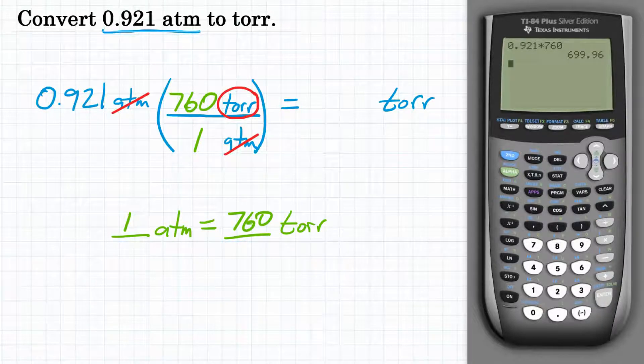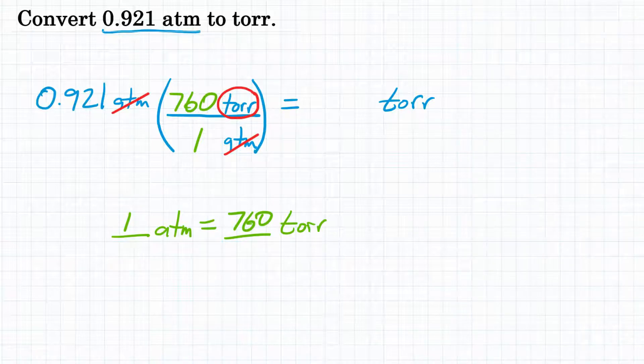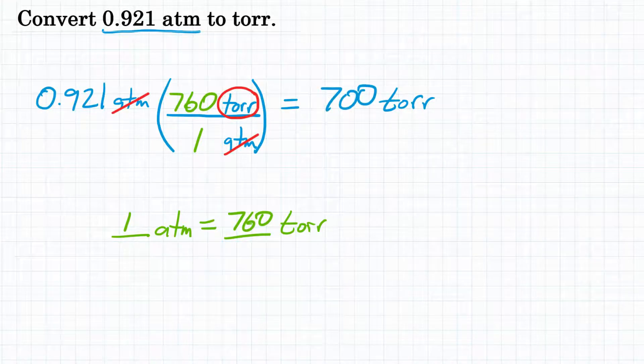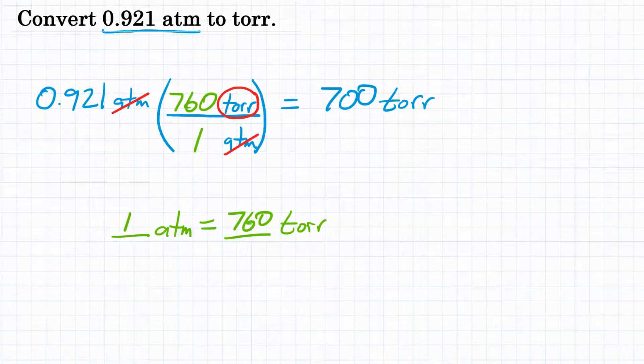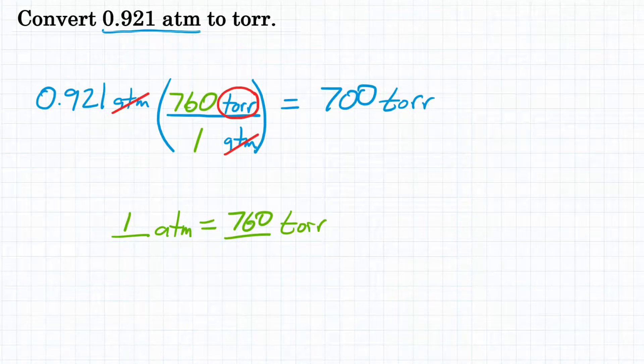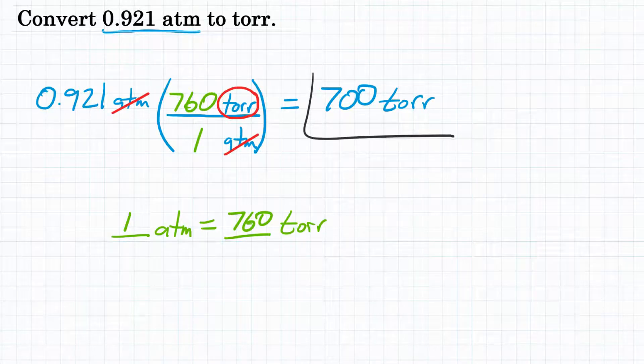Hit enter, and our calculator gives us 699.96. Let's round that to three significant figures, so we would get 700. Okay, so final answer, 0.921 atmospheres is how many torr? That would be 700.